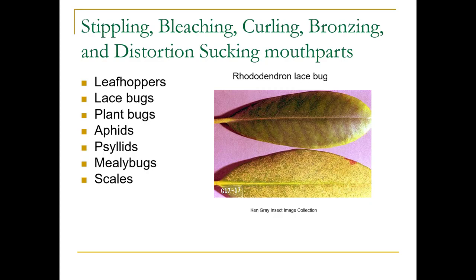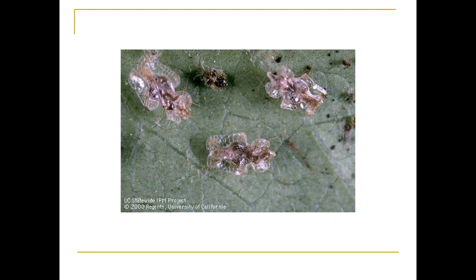Stippling is from piercing, sucking mouthparts. These include leafhoppers, lace bugs, plant bugs, aphids, psyllids, mealybugs, scales, whiteflies, adelgids, et cetera. Here's the actual rhododendron lace bug — they're going to be on the underside of the leaf, so you have that sign. The adults are actually very pretty insects, and then there are the nymphs. But the thing you're going to see, if you don't see the insects, are these black specks — that's fecal matter.